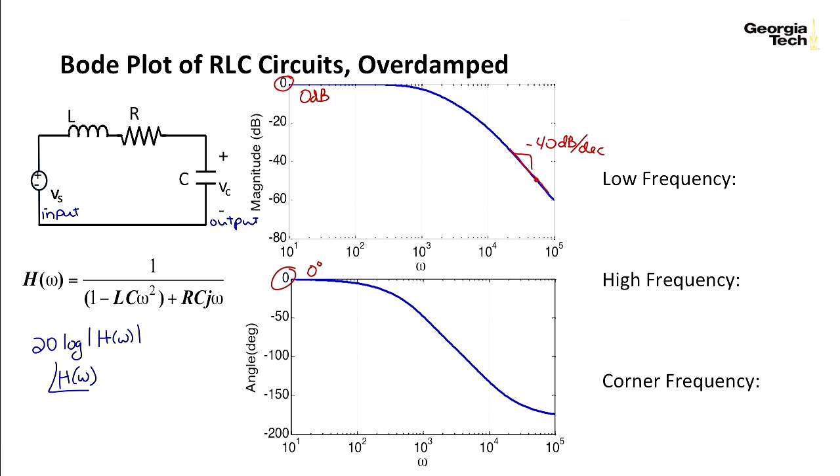If I look at this right here, kind of extend that line right there, and extend this line, what I'll find is a point right there where they match. And that is called the corner frequency. And the corner frequency is going to be one over the square root LC.